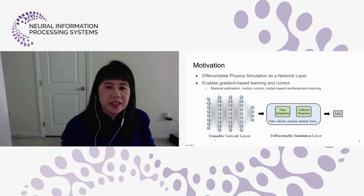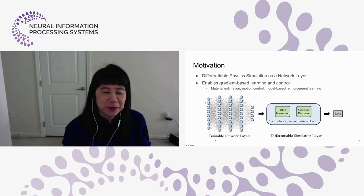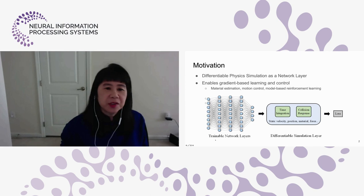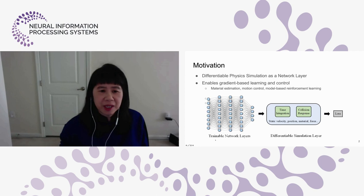The motivation here, hopefully it's obvious given this is the workshop on differentiable vision, graphics, and physics. What we are interested in is to embed differentiable physics simulation as a network layer. This can enable gradient-based learning and control for material estimation — one of our applications — as well as motion control and model-based reinforcement learning.